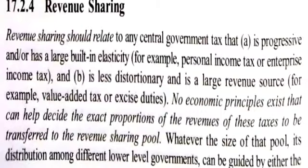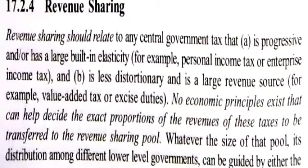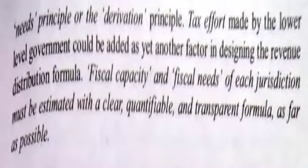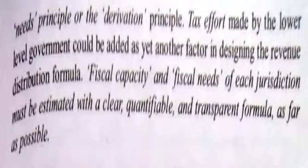Revenue sharing should relate to any central government tax that is progressive and/or has large built-in elasticity — for example, personal income tax or enterprise income tax. No economic principle exists that can help decide the exact proportion of the revenue of these taxes to be transferred to the revenue sharing pool. However, the distribution of the pool among different lower-level governments can be guided by either the needs principle or the derivation principle. Tax effort made by the lower-level government could be added as yet another factor in designing the revenue distribution formula. Fiscal capacity and fiscal needs of each jurisdiction must be estimated with a clear, quantifiable, and transparent formula as far as possible.